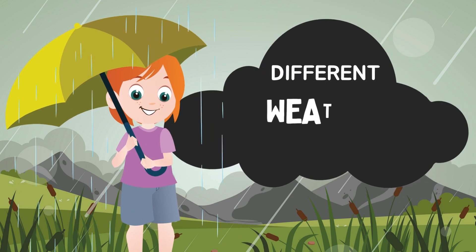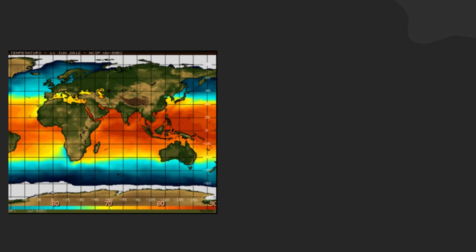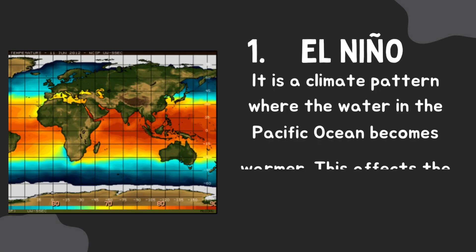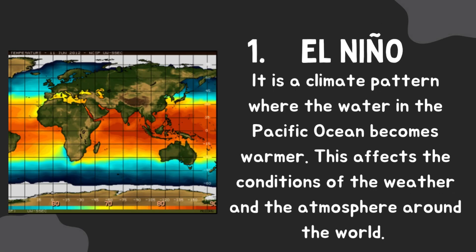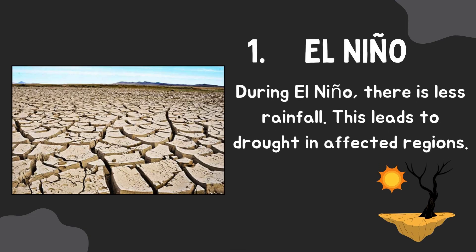What are the different types of weather disturbances? First, El Niño. It is the climate pattern where the water in the Pacific Ocean becomes warmer. This affects the conditions of the weather and the atmosphere around the world. During El Niño, there is less rainfall. This leads to drought in affected regions.